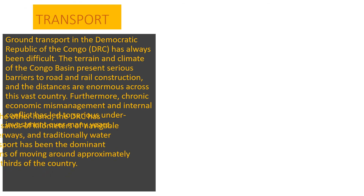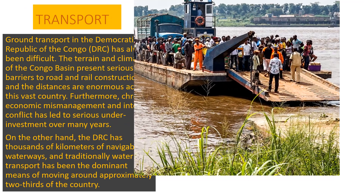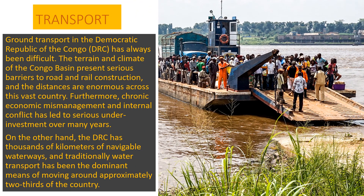Transport in the Democratic Republic of Congo has always been difficult. The terrain and climate of the Congo Basin present serious barriers to road and rail construction, and the distances are enormous across this vast country. The Democratic Republic of Congo has thousands of kilometers of navigable waterways, and traditionally water transport has been the dominant means of moving around approximately two-thirds of the country.